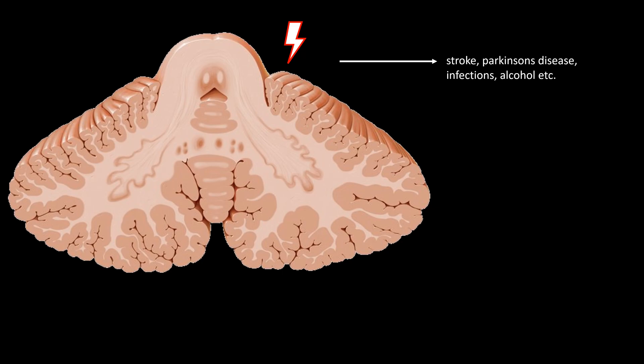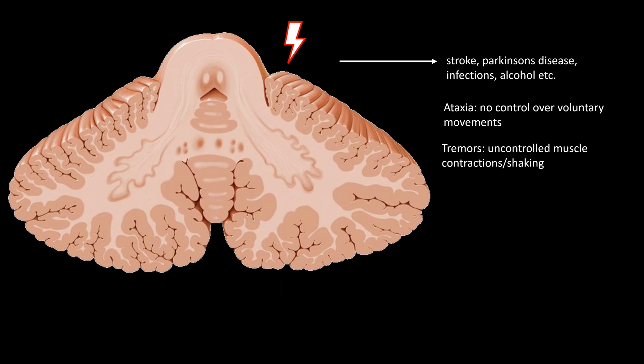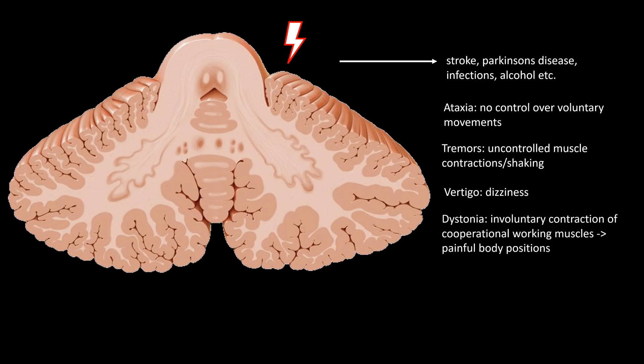However, if the cerebellum takes permanent damage, it can also cause cognitive impairments, especially movement learning or concentration deficiencies. Cerebellum dysfunction can lead to multiple movement impairments — for example, ataxia, being the loss of control over voluntary movement; tremors, meaning shaking or uncontrolled movement contraction; dizziness, basically having the feeling of spinning, otherwise known as vertigo; and dystonia, which describes the involuntary contraction of co-operational working muscles, often resulting in painful body positions.